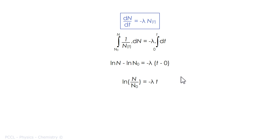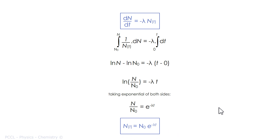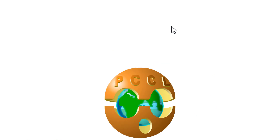The antiderivative of 1/N is ln(N), and that of dt is t. It comes that ln(N/N₀) equals minus λt. To get rid of the logarithm I take the exponential of both sides, and it comes that N as a function of t equals N₀ times e to the minus λt. This is how we show that this is the solution to the differential equation. That's it for this video, thank you.